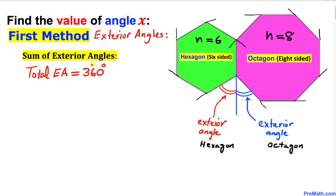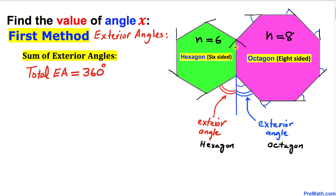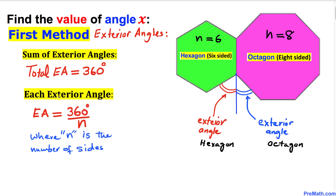Keep in mind that the sum of the exterior angles of any polygon is 360 degrees total. For the hexagon, adding all six exterior angles gives 360 degrees, and for the octagon, adding all exterior angles also gives 360 degrees always. So each exterior angle equals 360 degrees divided by n, where n represents the number of sides.